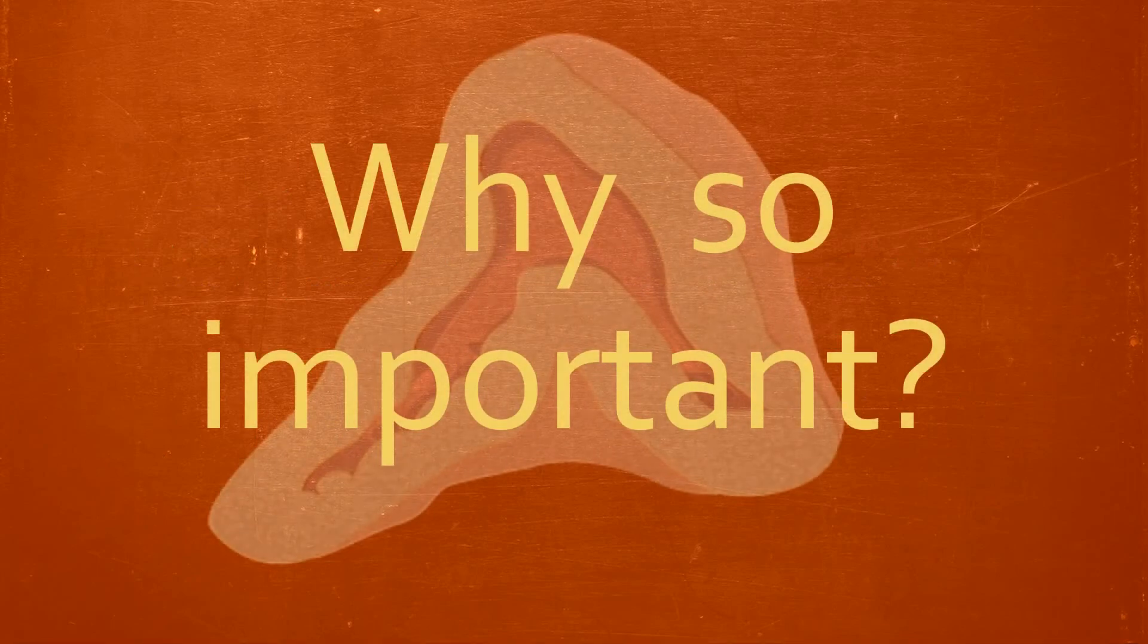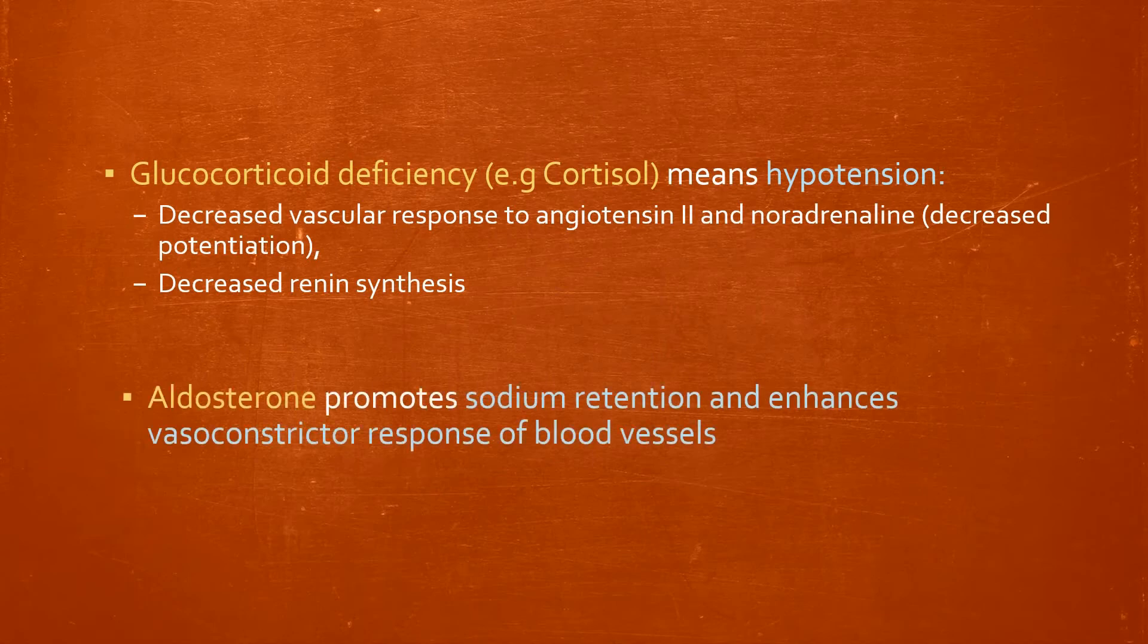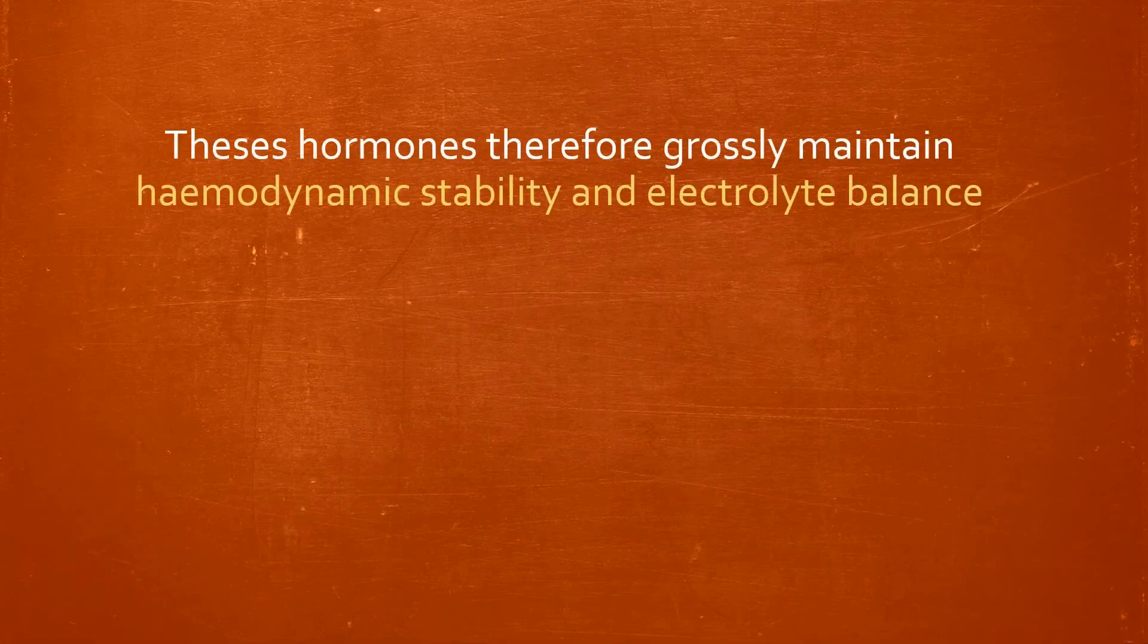So what exactly is so special about adrenal hormones and what happens when you don't have enough of them? Essentially, glucocorticoids such as cortisol have a huge role in maintaining blood pressure, as do mineralocorticoids such as aldosterone. Grossly, therefore, we can say they contribute to hemodynamic stability and electrolyte balance, and an untreated deficiency can cause cardiovascular collapse and death.